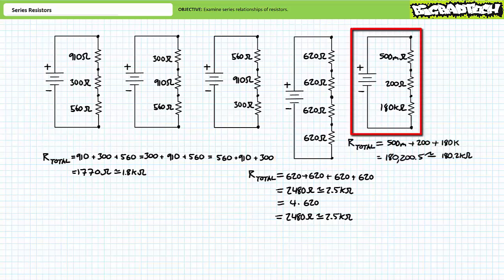For the fifth circuit, the source sees a summation of 0.5 ohms, 200 ohms, and 180 kilo-ohms for a total of 180,200.5 ohms, or roughly 180.2 kilo-ohms. This illustrates two facts: the largest resistor in a series relationship — in this case the 180 kilo-ohm resistor — dominates the whole relationship, while the smallest resistor, our 500 milliohm resistor, seems to get lost in the noise.